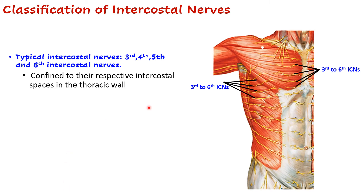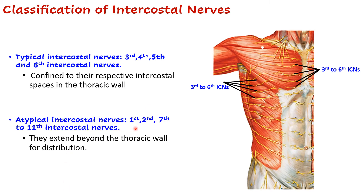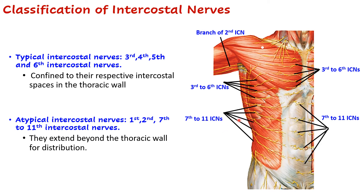The atypical intercostal nerves are seven in total — the 1st, 2nd, and 7th to 11th intercostal nerves. They are called atypical because their distribution extends beyond the thoracic wall. The 2nd intercostal nerve has a branch supplying the upper limb. The 7th to 11th intercostal nerves have branches reaching the anterior abdominal wall. The subcostal nerve also has a branch going to the gluteal region.